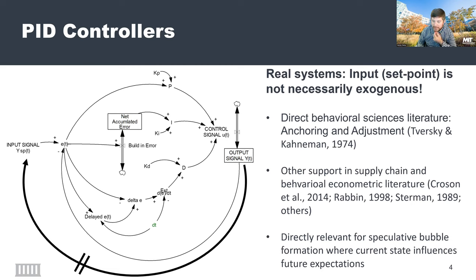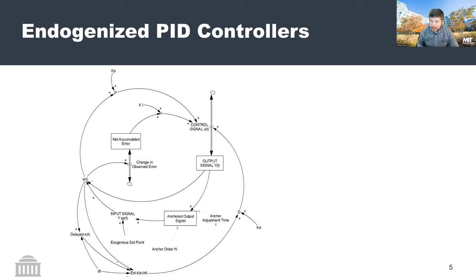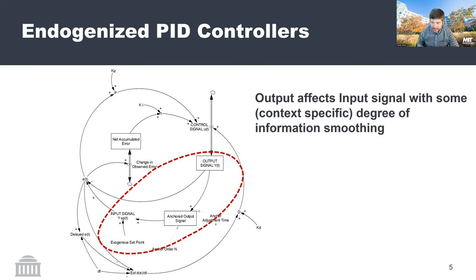At minimum, we should incorporate some idea of anchoring and adjustment — used repeatedly within supply chain literature. You can talk about the origins of oscillations within supply chains, the classic bullwhip, behavioral papers from Corson and Sturman, and more recent behavioral economics work by Rabin and Tversky and Kahneman. This is directly relevant to speculative bubble formation: when a bubble exists for any appreciable time, the speculation itself influences the expectations of individuals acting in the system. This allows me to construct what I call an endogenized PID controller, one in which your output signal directly affects your set point.